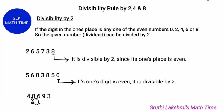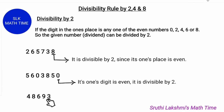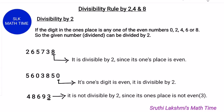Consider the number 48693. Here the ones place is 3, and 3 is an odd number. So 3 is not divisible by 2, and so this number is also not divisible by 2.